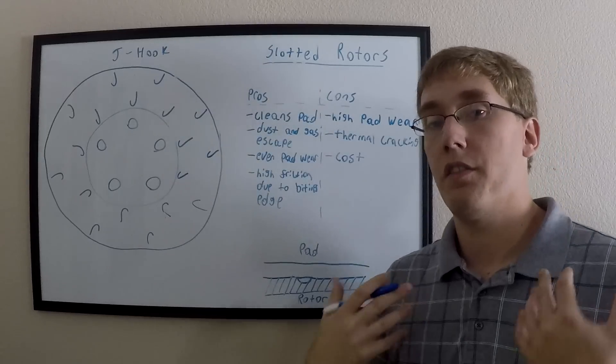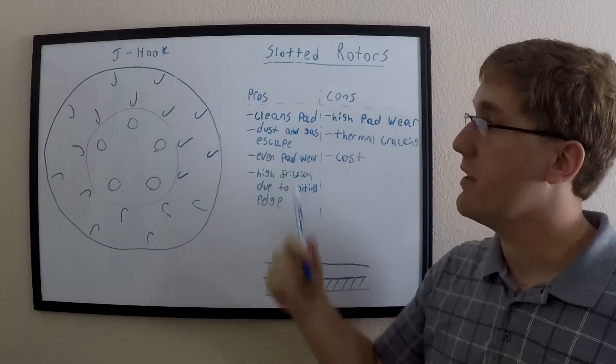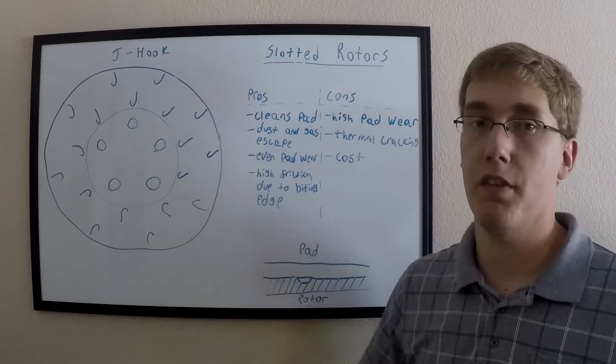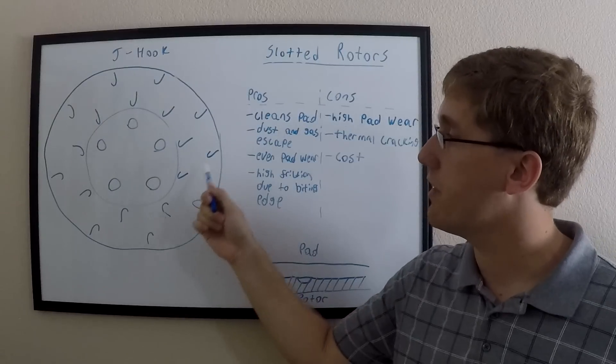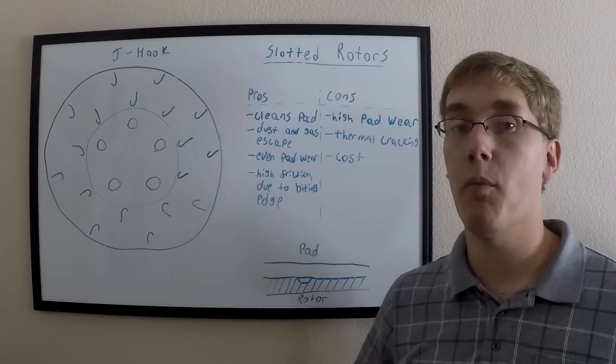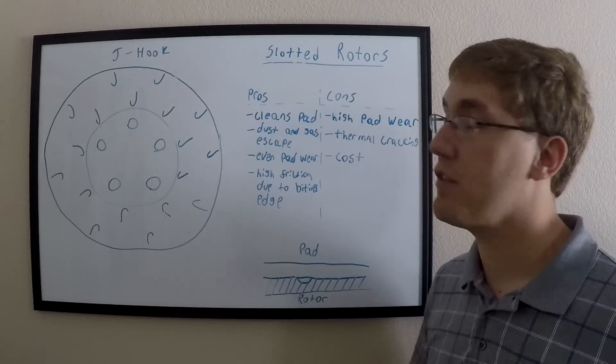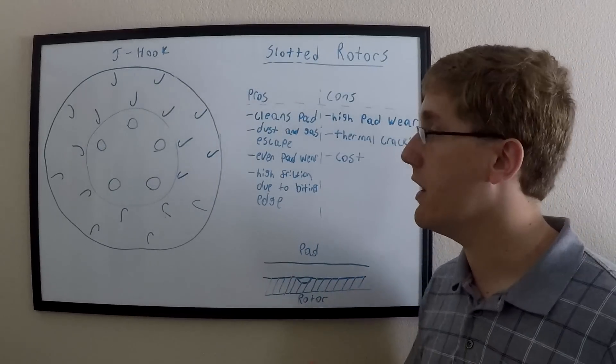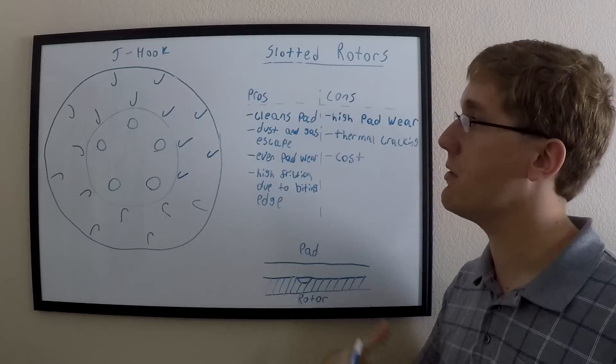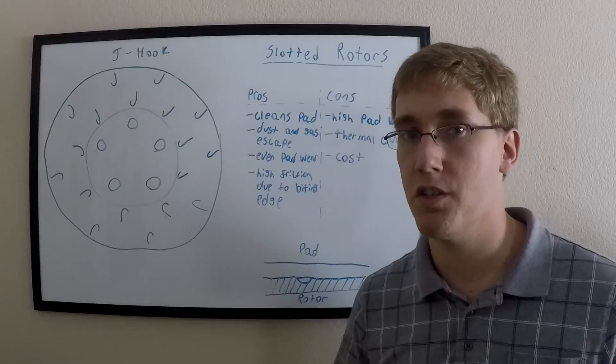There are, of course, loads of variants to slotted rotors. And one of those would be the J-hook design, where instead of having straight trenches throughout the surface of the disc, we have these little trenches that form J's. This is a much more aggressive slot design that gives you a lot more pad bite. But that also means you've increased the rate of wear in your rotor. And these are, of course, a lot more expensive to make than your typical slotted rotors.